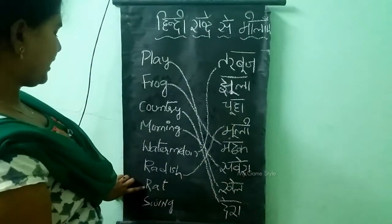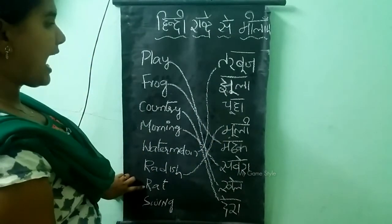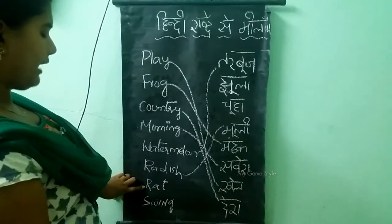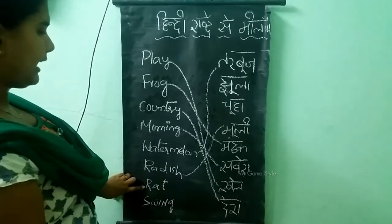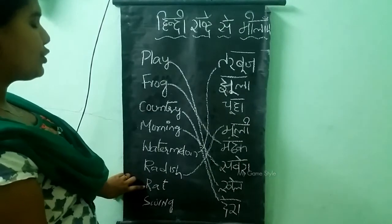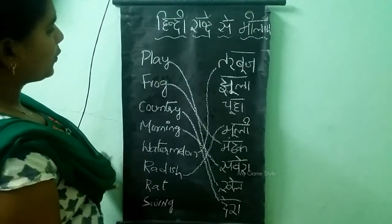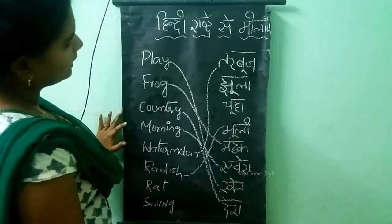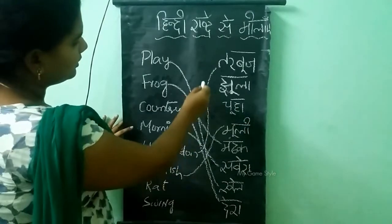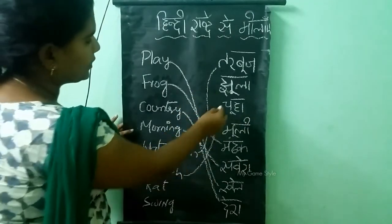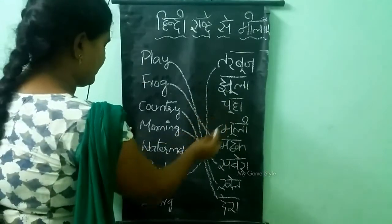Next one is Rat. Rat ko kahte hai Chuhha. Where is Chuhha? Here it is.